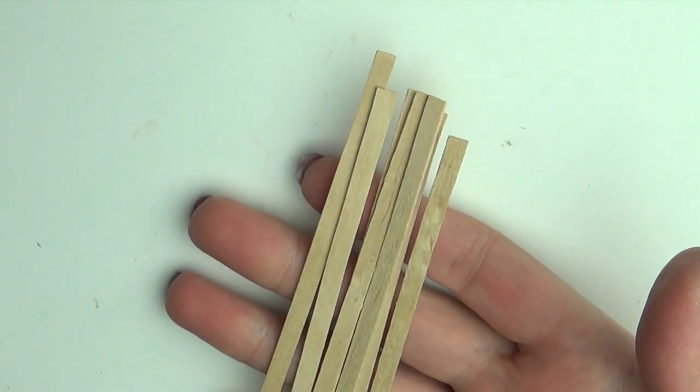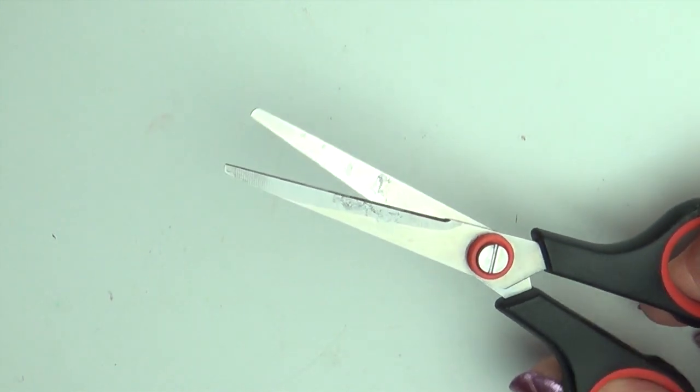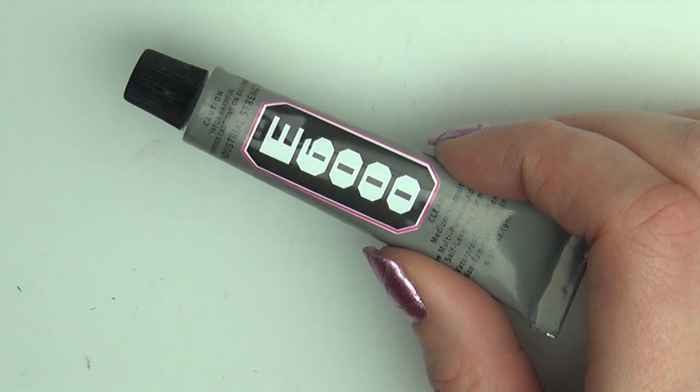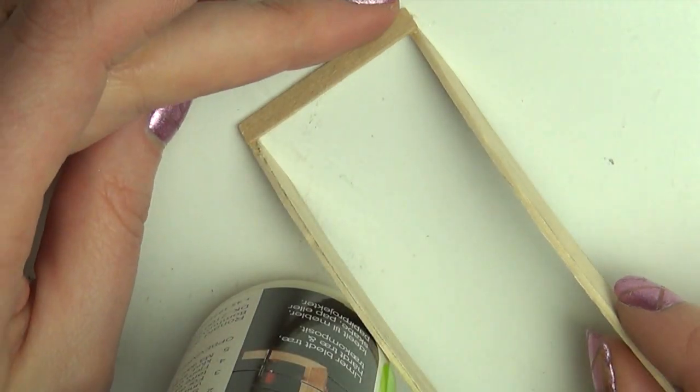To go on top I'm using these small stirring sticks that I just cut to size with a scissor. Now glue them on top of the base. I used E6000 because I needed something that glues pretty fast.